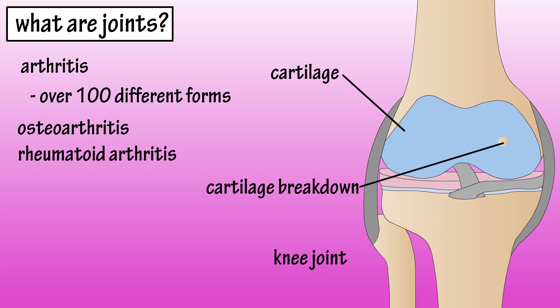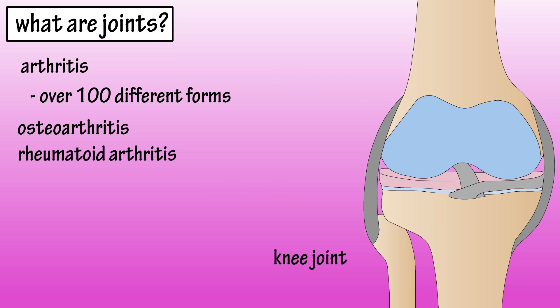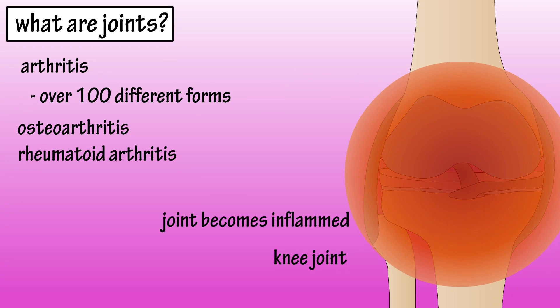Arthritis is the most common joint disease, and there are over 100 different forms of arthritis, with osteoarthritis and rheumatoid arthritis being the most common. Osteoarthritis is when there is a reduction in the amount of cartilage tissue of the joint, usually resulting in bones rubbing on bones, and can be brought on by regular wear and tear or injury to the joint. Rheumatoid arthritis is a disorder where the immune system attacks body tissues.